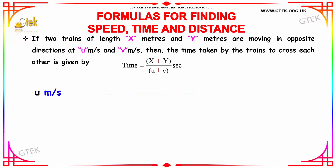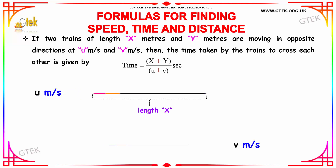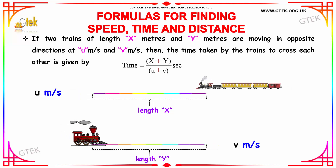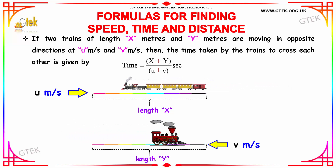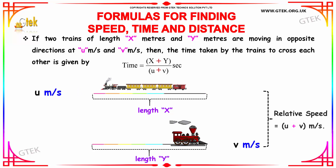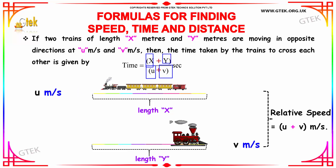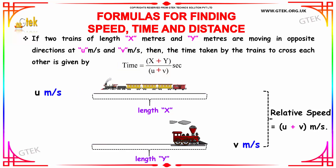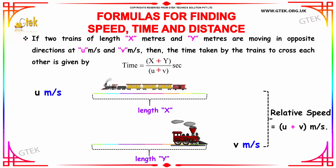If two trains of length x meters and y meters are moving in opposite directions at u meters per second and v meters per second, the time taken by the trains to cross each other is given by x plus y divided by u plus v, where x plus y is the total length of both trains and u plus v is the relative speed.